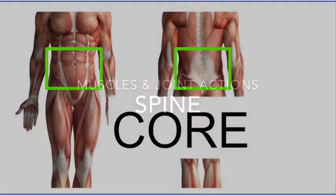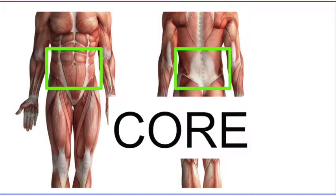Welcome to the AFL-CA Exercise Theory video series supplementing Chapter 7, Basics of Anatomy. In this video, we're going to cover the muscles of the spine and their joint actions. The muscles we're discussing are known as the core muscles.